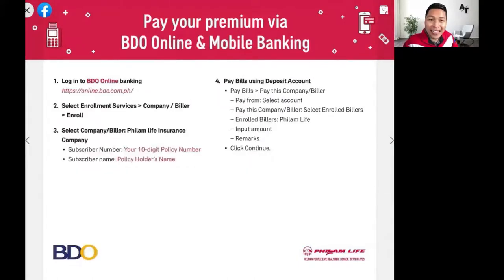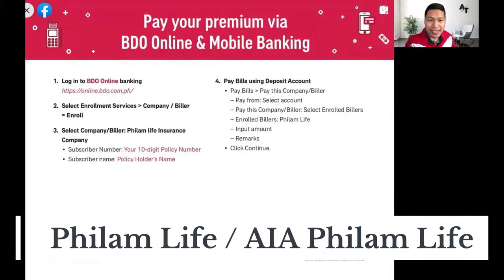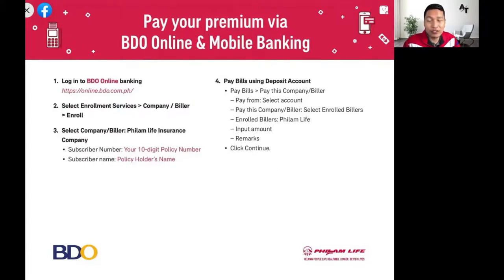Up next is BDO online. What's good about the BDO app is you can enroll your Philam Life plans directly via the app — no need to go to the website. Go to Enrollment Services and look for the biller Philam Life or AIA Philam Life. The subscriber number will be your policy number, and the subscriber name will be the policy owner's name. Then pay bills using the 'Pay This Company or Biller' feature, select your account, input the amount, and pay online.